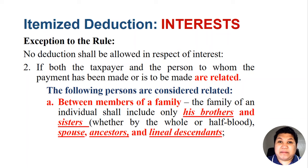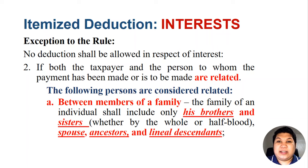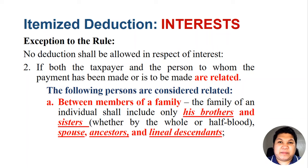Spouse, ancestors — any person in your upper bloodline: your lola, your aunties, your uncles, your lola's mother, etc. And lineal descendants — your children, your children's children, and their children. Those people are considered family members. So if you are the taxpayer, if you are the borrower, and you loan something from your parents, any interest thereon cannot be deducted from your gross income because you are related by blood.